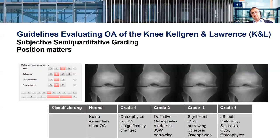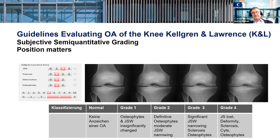This is the Kellgren-Lawrence score. As you see here, this shows the continuous degradation of the medial aspect of the joint. The Kellgren-Lawrence score has some parameters, and all of them are assessed semi-subjectively, leading to a very high incidence of inter-individual variety when you assess such a score.